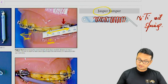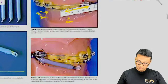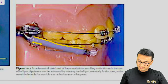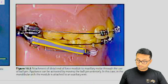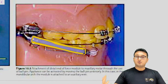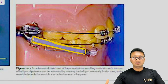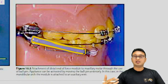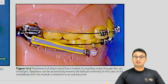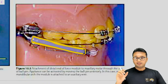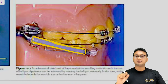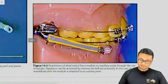As the name suggests, the Jasper Jumper was invented by a person called Jasper. The appliance has a silicone covering over the nickel titanium super-elastic coil spring. The silicone is biocompatible, prevents accumulation of food particles, and makes the appliance much more comfortable to the patient, since these appliances are quite bulky. The silicone coating prevents trauma during masticatory and speech functions.